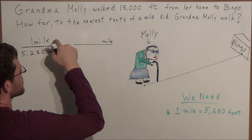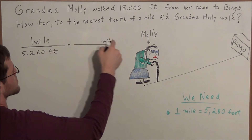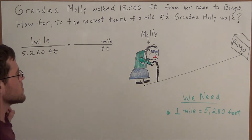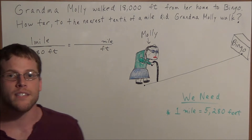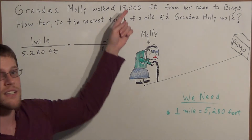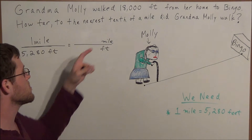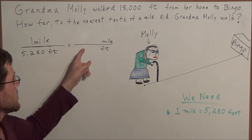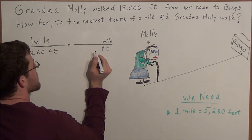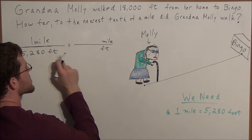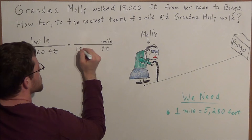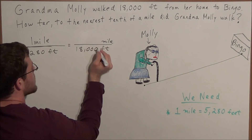So we need to make sure the units of measurement match up. We have miles in the numerator and feet in the denominator. So now when we go back to the information that was given to us, we were told that she walked 18,000 feet. So we're going to be substituting 18,000 in the denominator of this fraction, because feet needs to match up with feet, and we were given 18,000 feet.